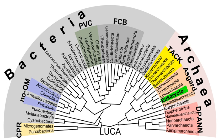While prokaryotes are considered strictly unicellular, most can form stable aggregate communities. When such communities are encased in a stabilizing polymer matrix, they may be called biofilms. Cells in biofilms often show distinct patterns of gene expression in time and space. As with multicellular eukaryotes, these changes in expression often appear to result from cell-to-cell signaling, a phenomenon known as quorum sensing. Biofilms may be highly heterogeneous and structurally complex and may attach to solid surfaces, or exist at liquid-air or liquid-liquid interfaces. Bacterial biofilms are often made up of microcolonies — approximately dome-shaped masses of bacteria and matrix separated by voids through which the medium may flow easily.